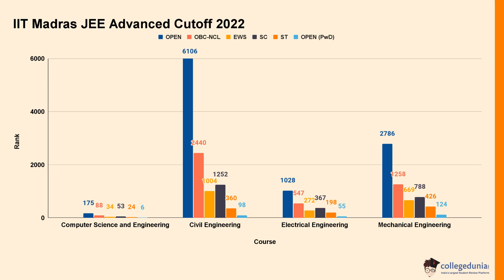For IIT Madras JEE Advanced cut-off 2022, for Computer Science and Engineering, the cut-off rank was 175 for Open category, 88 for OBC-NCL, 34 for EWS, and 53 for SC. For Civil Engineering, the cut-off rank was 6106 for Open category, 2440 for OBC-NCL, 1004 for EWS, and 540 for SC.